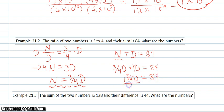And then divide both sides by 1 and 3/4. So d equals 48. And my n equals 36.